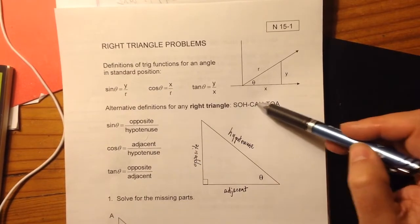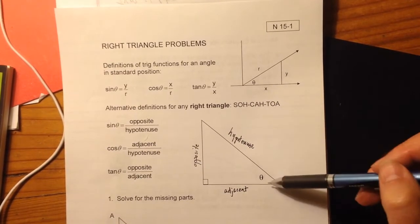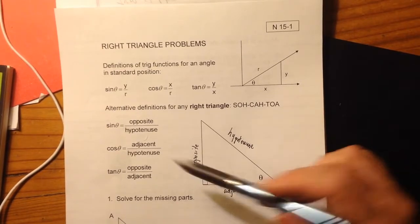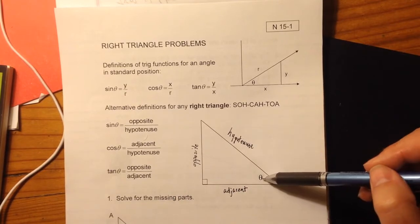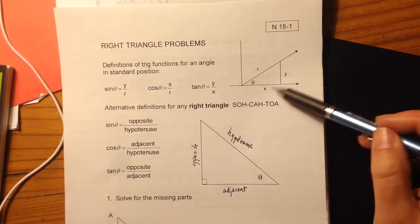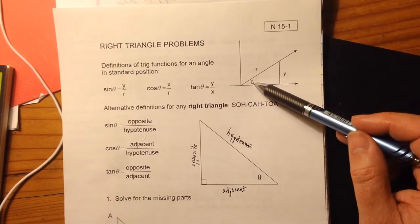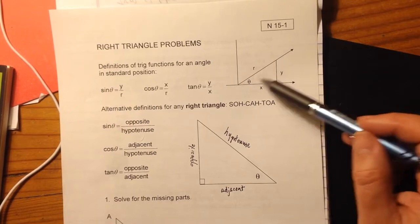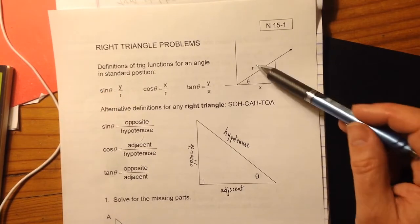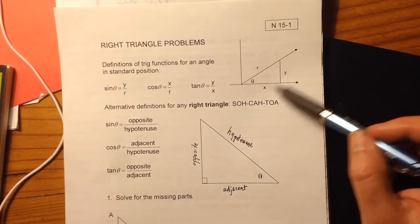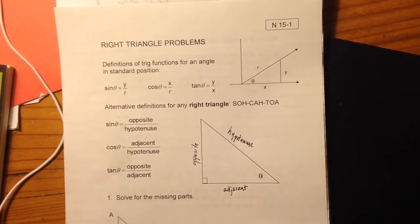Cosine, C-A-H, cosine is adjacent over hypotenuse. And tangent is opposite over adjacent. Notice that would work up here as well. If I'm looking at this small angle, then opposite over hypotenuse would be Y over R. Adjacent over hypotenuse, that's your cosine, X over R. Tangent, opposite over adjacent, Y over X.